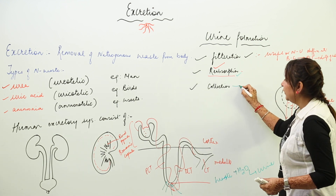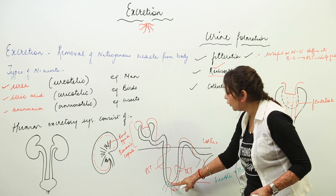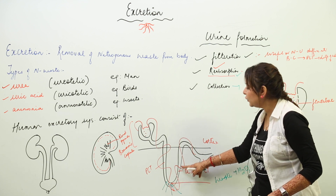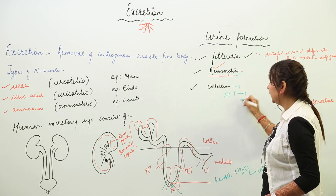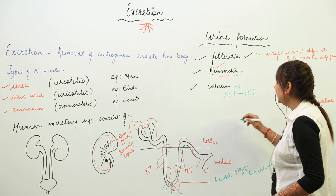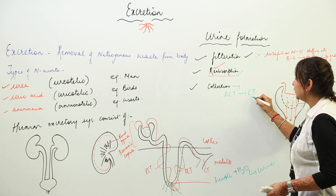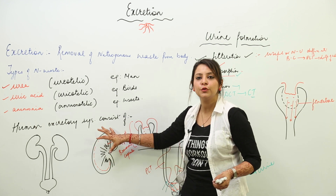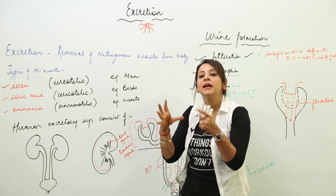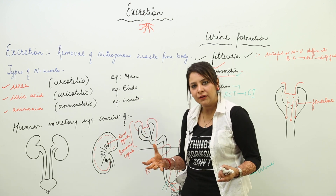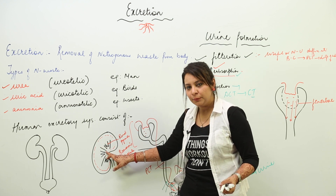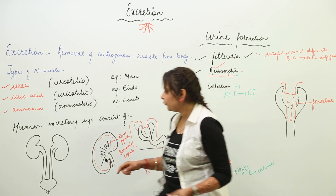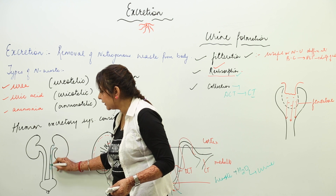Third is collection. The urine now passes from the DCT to the collecting tubules (CT). As there are many nephrons, all the collecting tubules of different nephrons unite to form bigger collecting tubules, and they pour their secretion into the renal pyramids, and through the renal pyramids into the ureter.